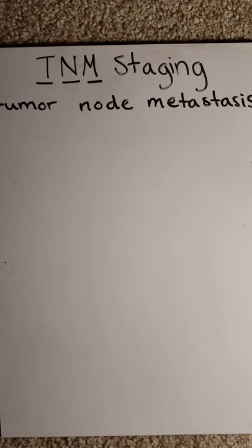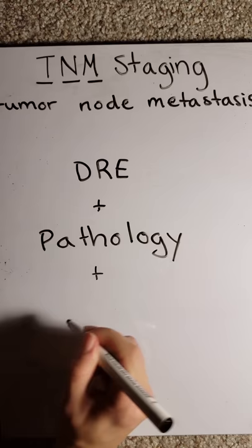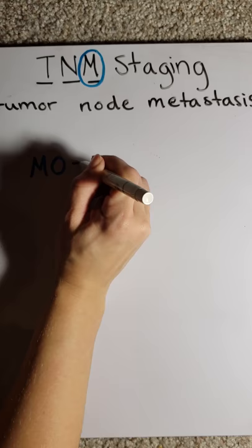Now that we have a diagnosis of cancer, we can proceed with TNM staging. T stands for tumor, N for lymph node, and M for metastasis. TNM staging is determined by a combination of digital rectal exam, pathology report, and scans. Let's start with M.